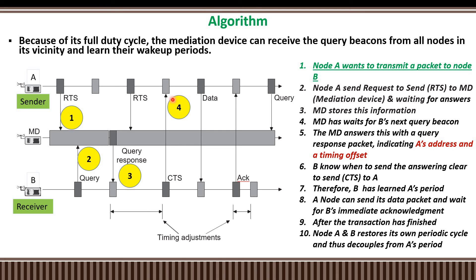Once the CTS is received by Node A, it starts transmitting packets from A to B. Once each packet is received, B sends an acknowledgement back to A. This process repeats until all packets are transmitted and all information is communicated from A to B.